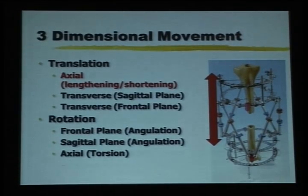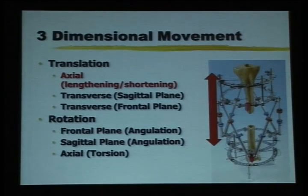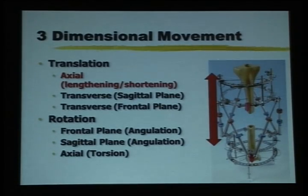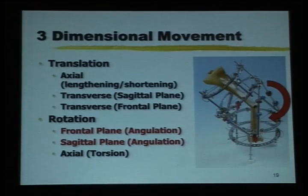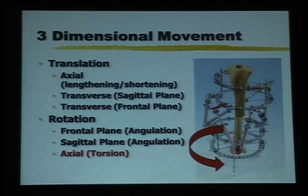Similarly, angulation — if the z-axis is coming straight out at you and this has to be corrected — that is nothing but a rotation around the z-axis. There are three rotations and three translations. Transverse movements are either in the sagittal or frontal plane, angular corrections are rotations in those planes, and torsion is movement around the axial axis.